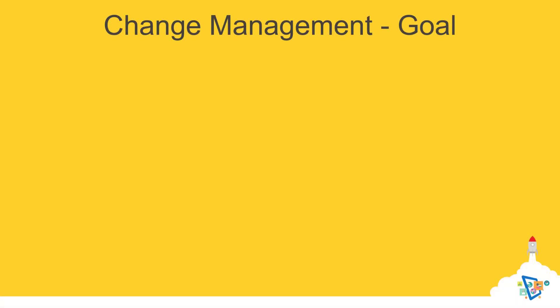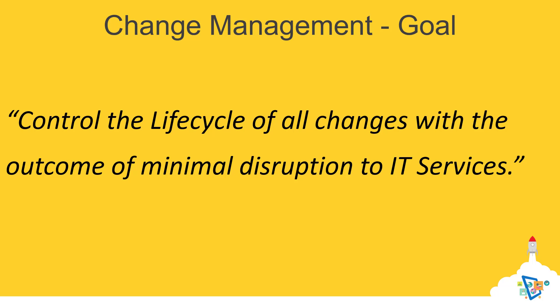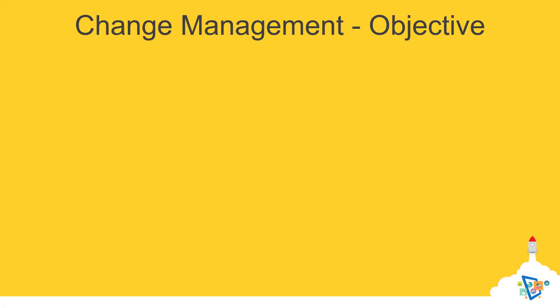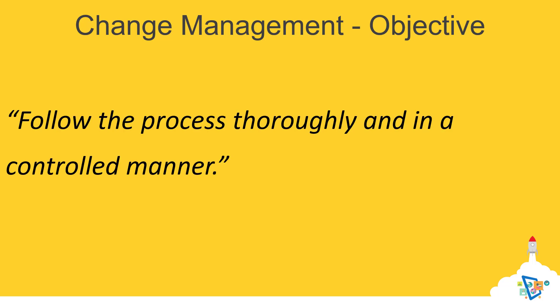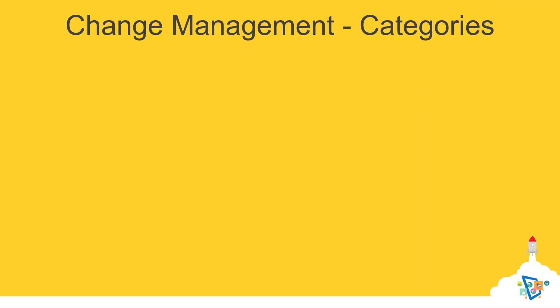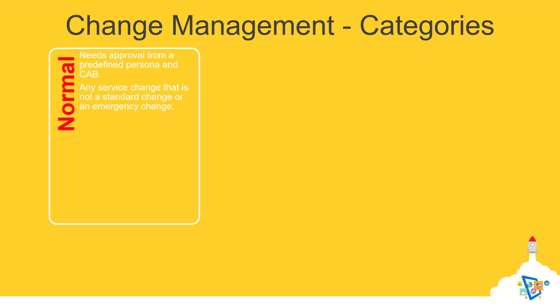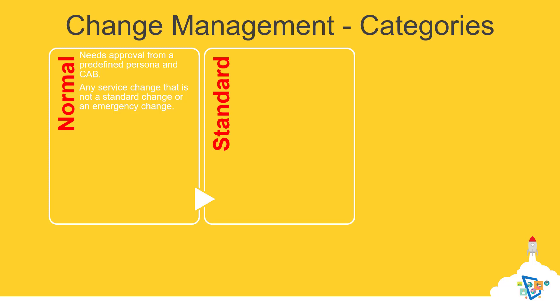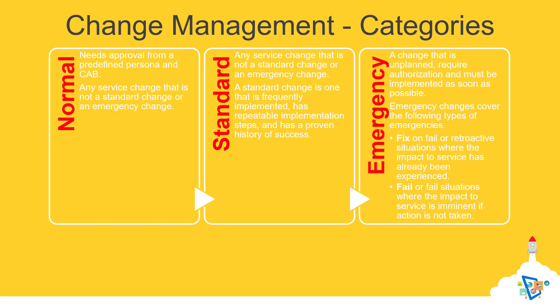Starting with goal, we can mention controlling the lifecycle of all the changes with the outcome of minimal disruption to IT services. Then we have the objective: following the process thoroughly and in a controlled manner is a must. The last pillar is the category types: normal changes which require approval from a predefined persona and CAB; standard changes which do not require any approval and are probably the most common; and lastly, emergency changes which are unplanned and require authorization from CAB.